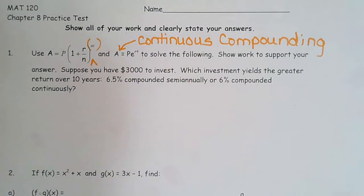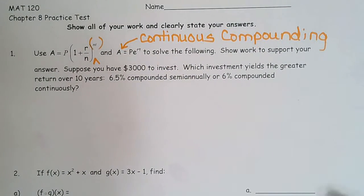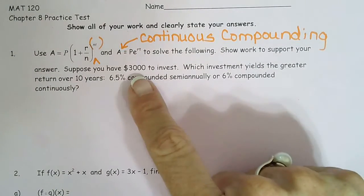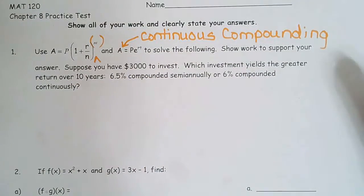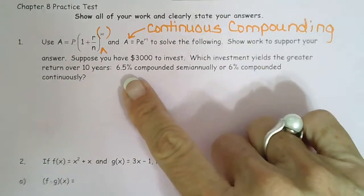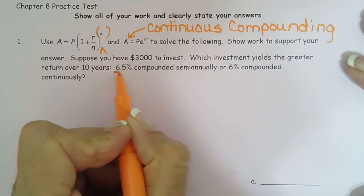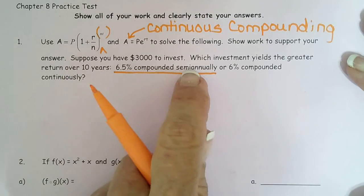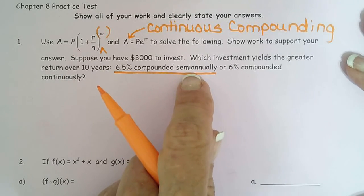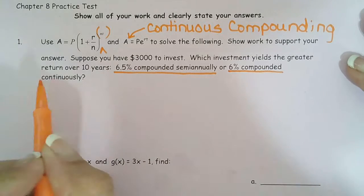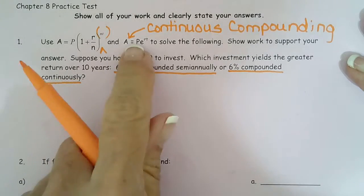Otherwise, if we can count how many compounding periods there are per year — semi-annually is 2, quarterly is 4 — then we use the first formula. So you have $3,000 to invest. Which investment yields the greater return over 10 years? 6.5% compounded semi-annually — that goes with the first formula because semi means every half year, so this is twice a year — or 6% compounded continuously, which means we use the second formula.